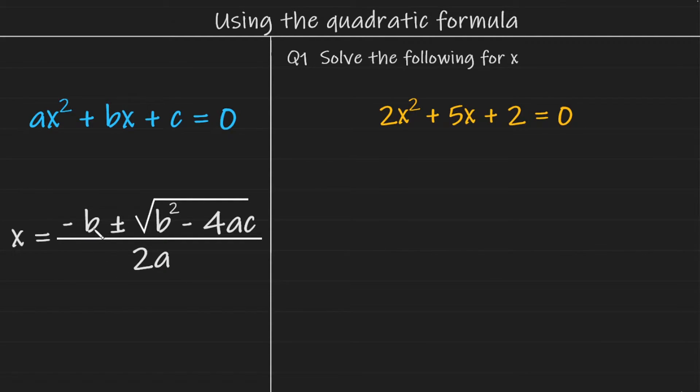x is equal to minus b plus or minus the square root of b squared minus 4ac all over 2a. The a, b and c in the formula can be located in the equation like this.